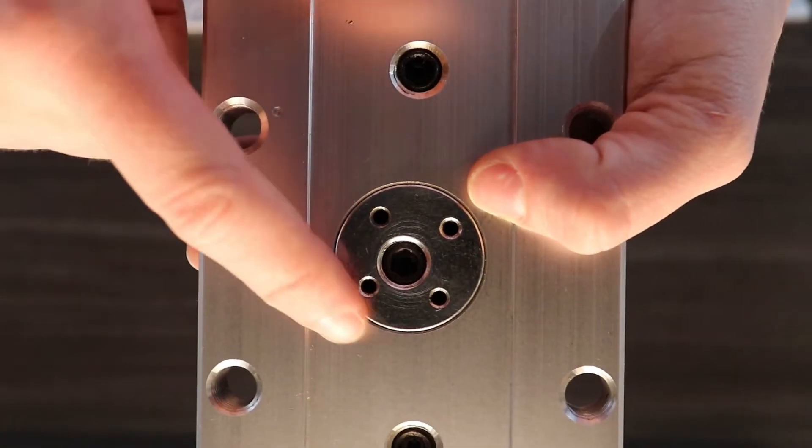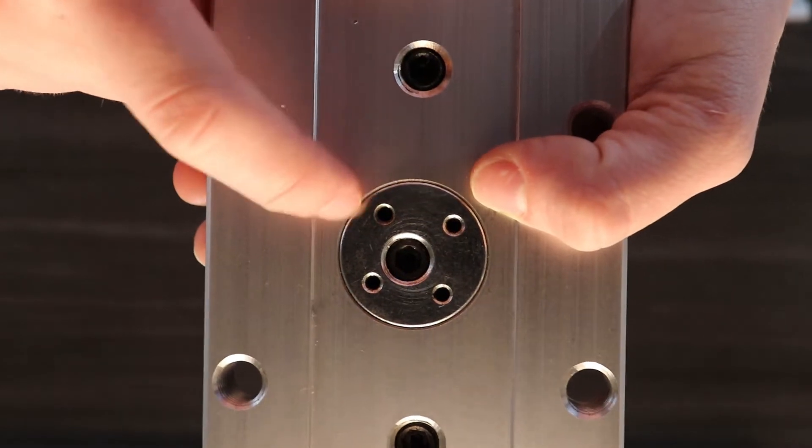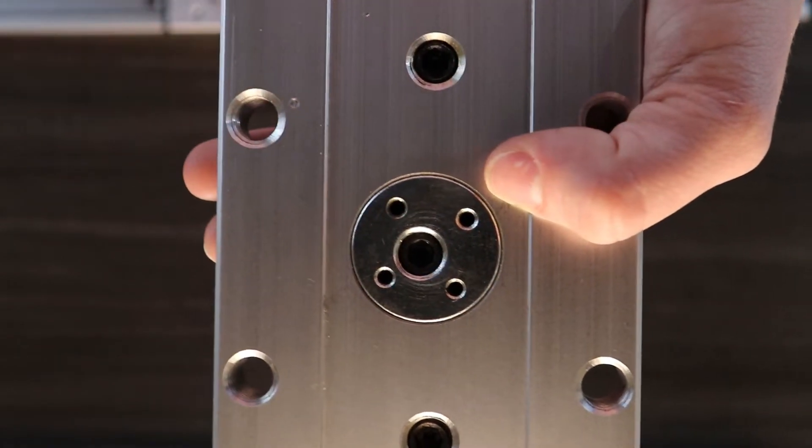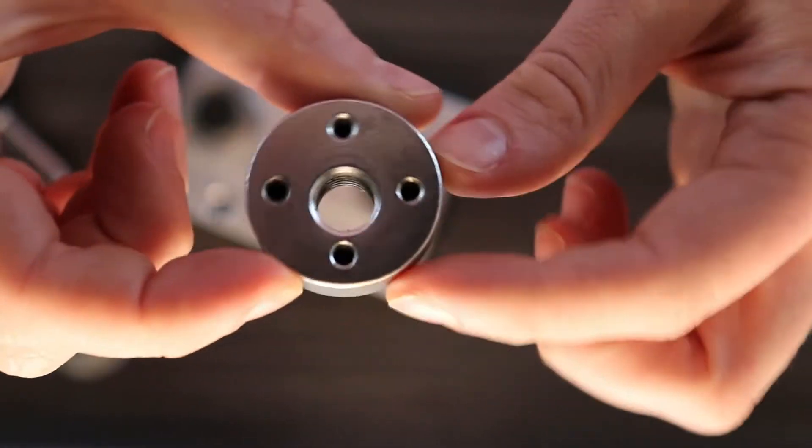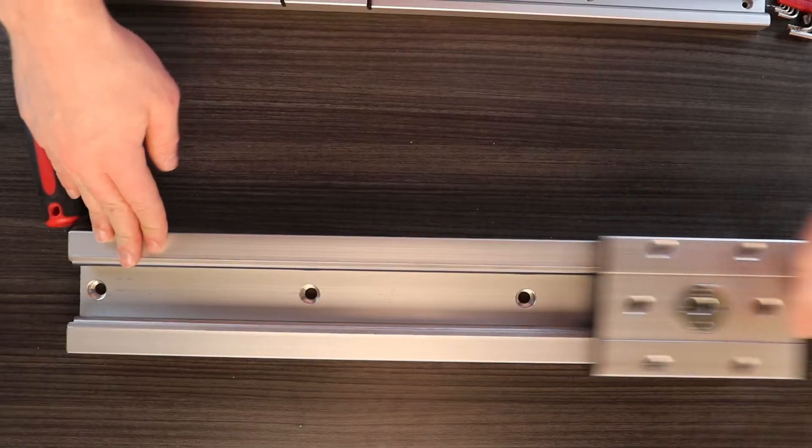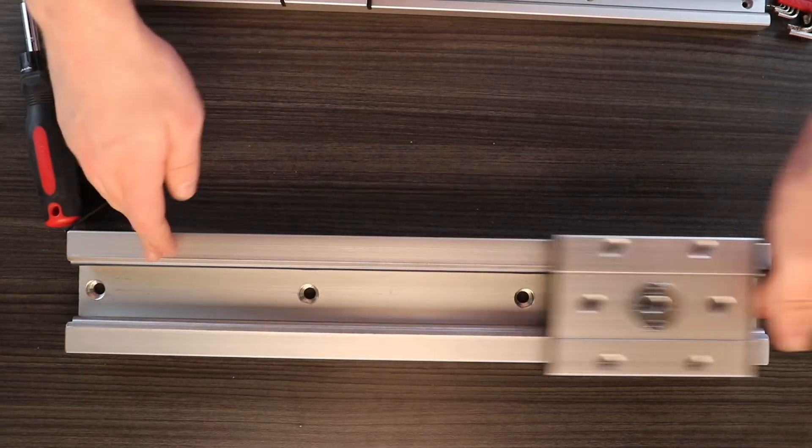Notice that this central black bolt is off centre in this silver disc. By rotating this disc we can move the bearing closer or further away from the rail, changing the friction and drag.